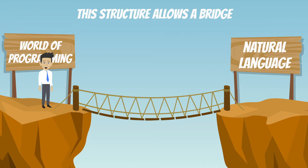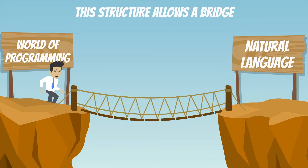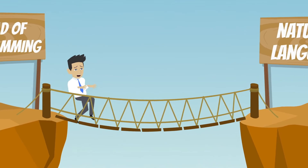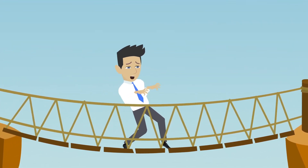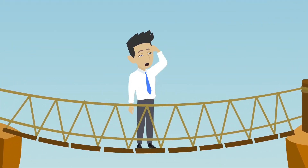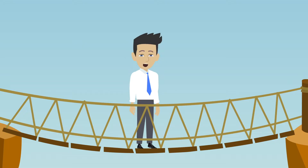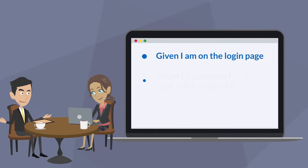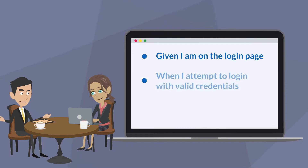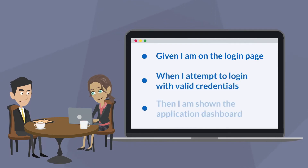A BDD feature file consists of one or more scenarios. These scenarios are just examples of how the application should behave from the standpoint of the user. For example, you might have a scenario that says: given I am on the login page, when I attempt to login with valid credentials, then I am shown the application dashboard.